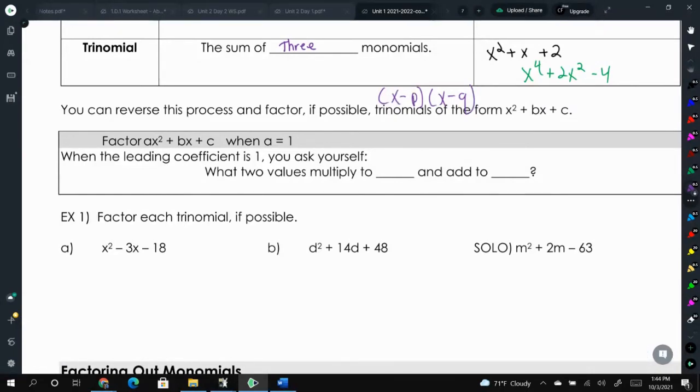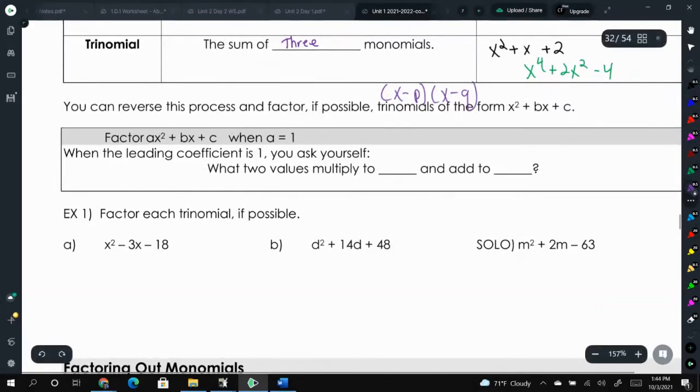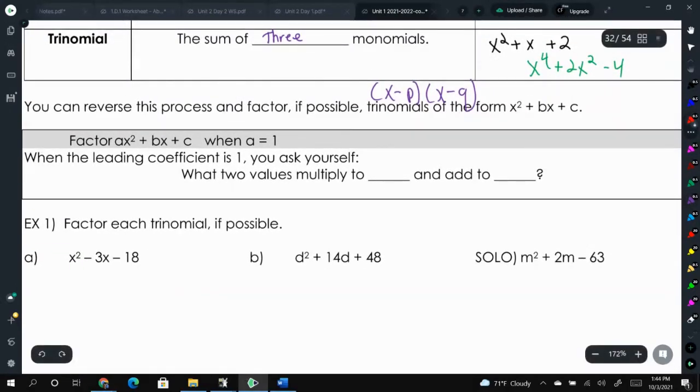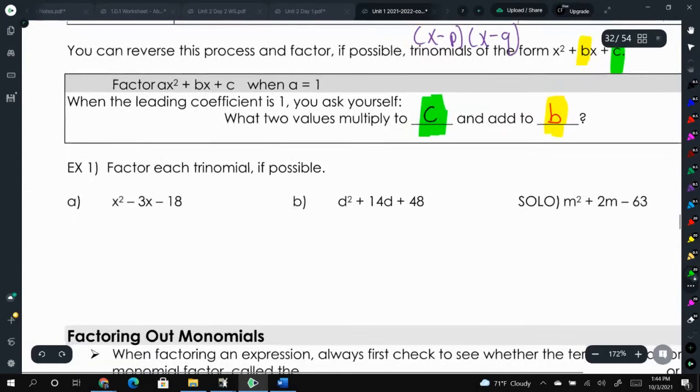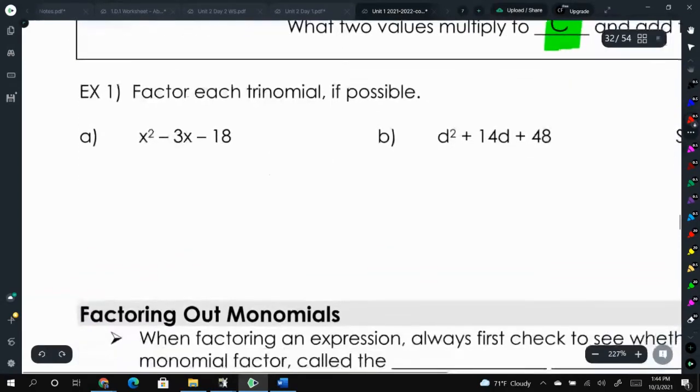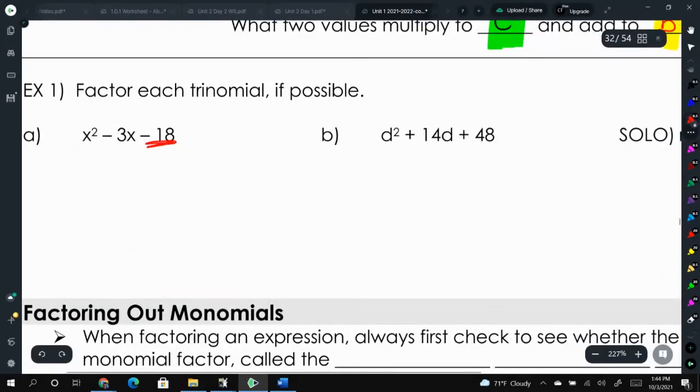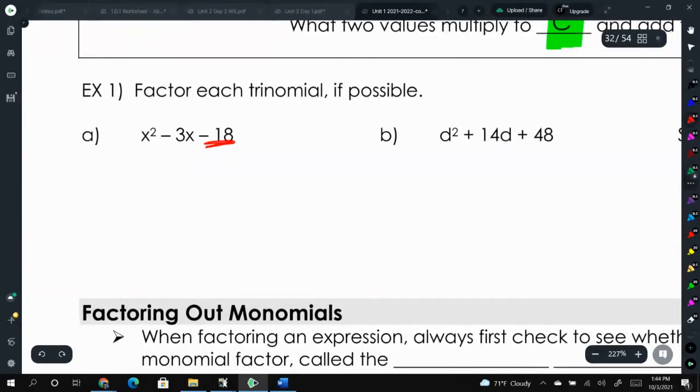So the easiest way to factor is when a is equal to 1. If you have an a value that is 1, what you want to do is you want to find two numbers that multiply to your c term and add to your b term. Remember, those come from our standard form. So let's look at some examples. We have x squared minus 3x minus 18. So we want two numbers that multiply to negative 18, don't forget the negative sign, but add up to negative 3.